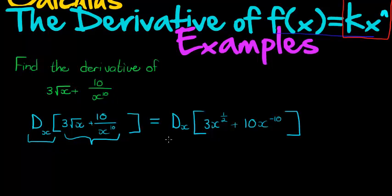Now we can find the derivative the easy way. So finding the derivative, multiply the half with the 3, gives me 3 over 2, and subtract 1 from a half. A half minus 1 is negative a half.